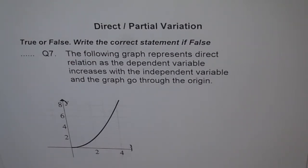This is a question for you. Let's test whether you have understood. Question 7: The following graph represents direct relation as the dependent variable increases with independent variable and the graph goes through origin.